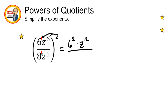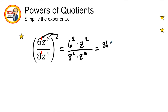In the denominator, 1 times 2 is 2, so it will be 8 squared. And 5 times 2 gives us z to the 10th power. So we have 6 squared is 36z to the 12th power, all over 8 squared which is 64, and z to the 10th power.